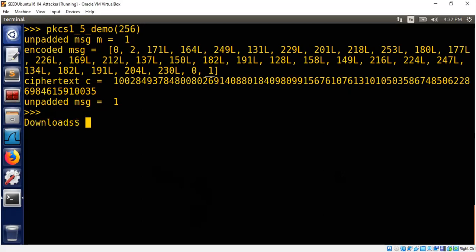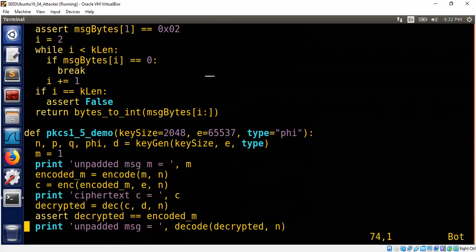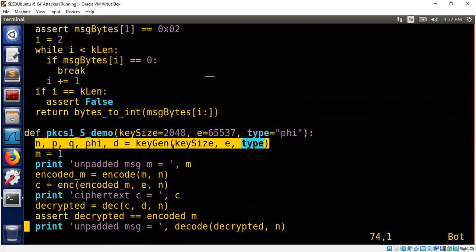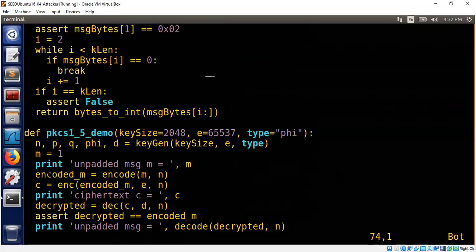All right, let me show you the source code, RSA PKCS. So here is the regular key generation part. You generate the keys, public key, private key, and so on. And then here is the message m to be 1 for demo purpose.